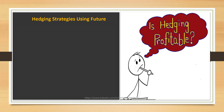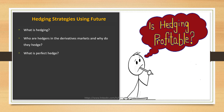When we study hedging strategies using futures, the first question that comes to mind is: is hedging profitable? To answer this, we must be clear on what hedging is, who the hedgers are in the derivative market and why they hedge, what a perfect hedge is, and the types of hedging — short hedge and long hedge. Finally, I will discuss various case studies covering arguments for and against hedging.